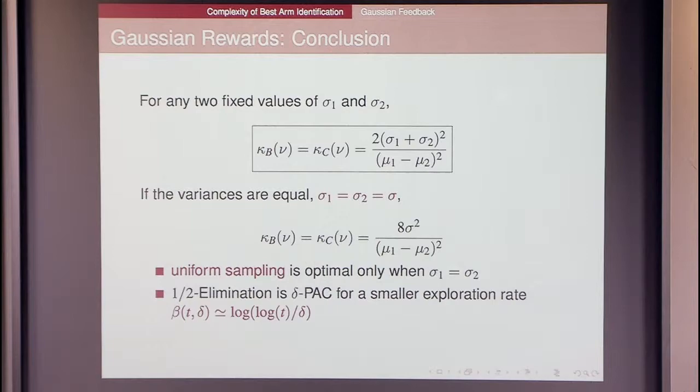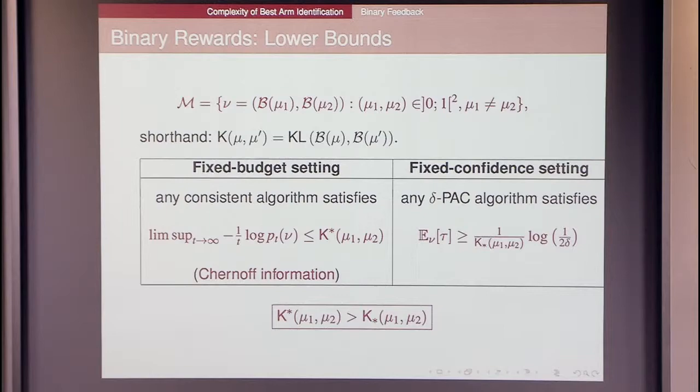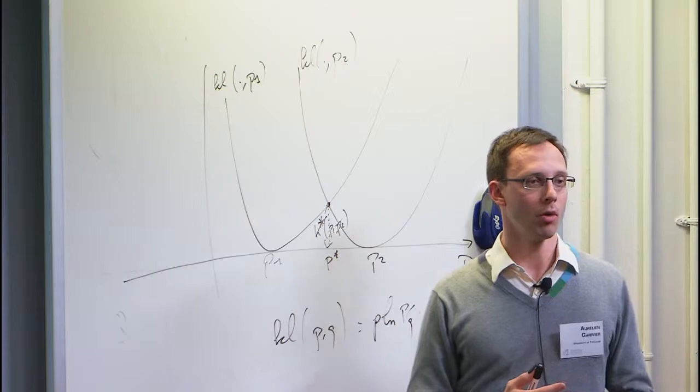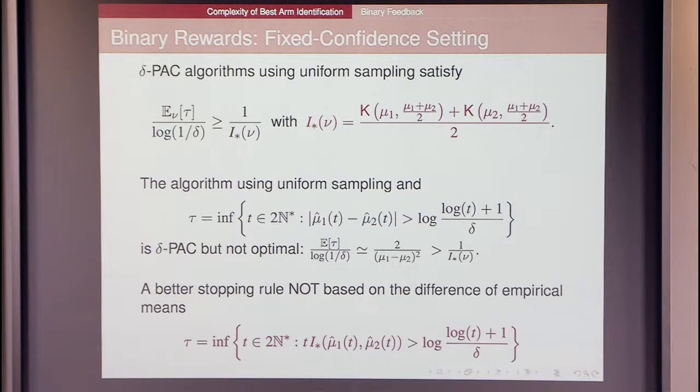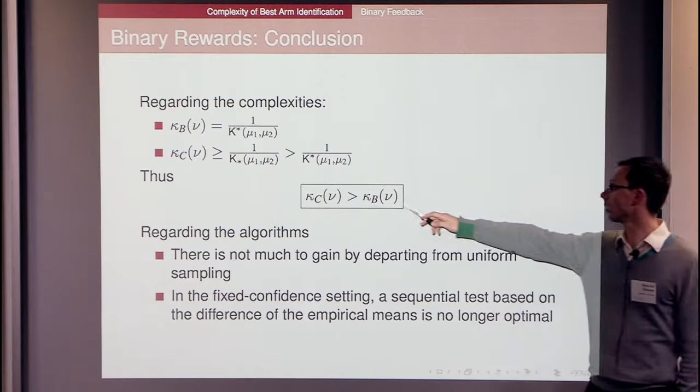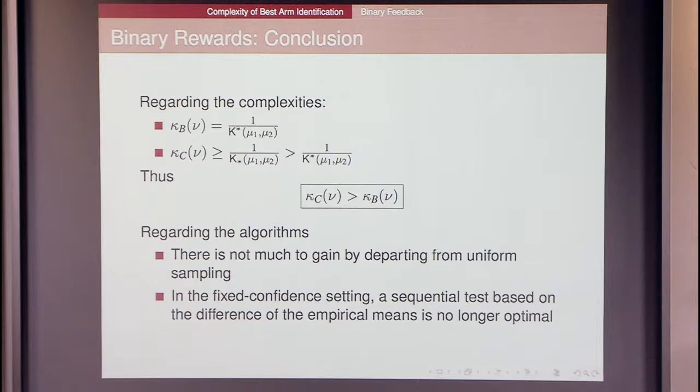This will be my last point. In the case of binary rewards, they do not coincide. There is not this property, the variance is not the same everywhere. It has large consequences. In particular, contrary to what we thought initially, and contrary to the case of two fixed hypotheses, here the complexity of the fixed confidence setting appears to be larger than the complexity of the fixed budget setting. To identify them exactly is very hard, but we have been proposing some elements of answer and some conclusions that allow us to say that in this setting, this complexity is larger than that of the fixed budget setting, which we found a surprising and a bit remarkable result. Thank you for your attention. I think that is my time.